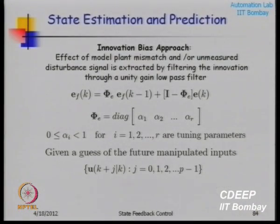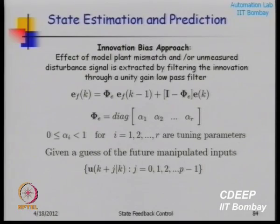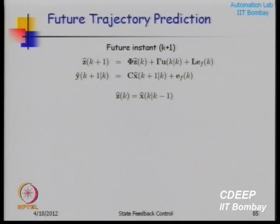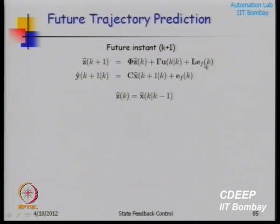After finding the innovation bias, suppose we are given future inputs u_k, u_{k+1}, u_{k+2}. The prediction works as follows: z_{k+1} is the first prediction, corrected using the filtered innovation. The predicted output y is also corrected using the filtered innovation. This correction brings in the effect of unmeasured disturbances and plant-model mismatch on the future prediction.